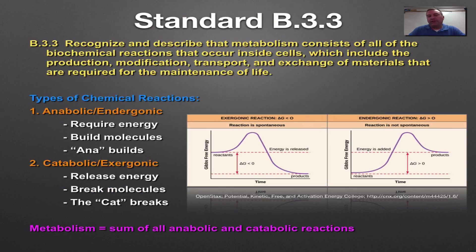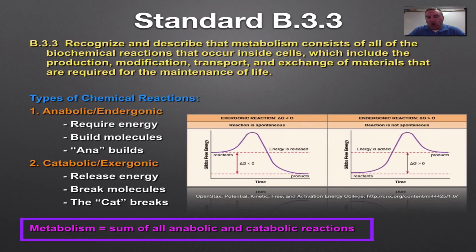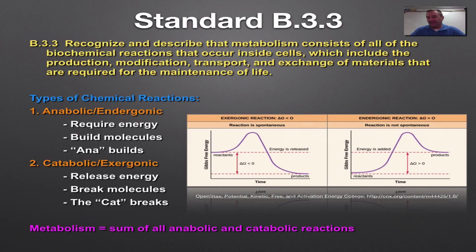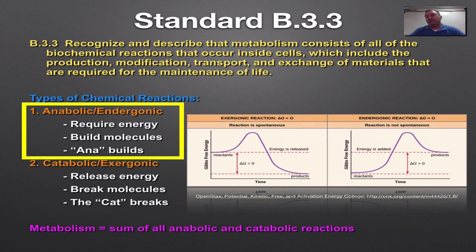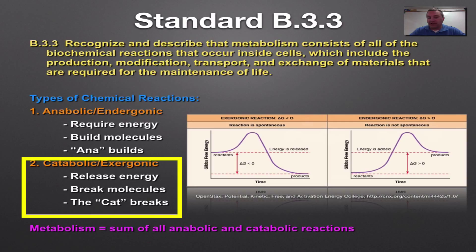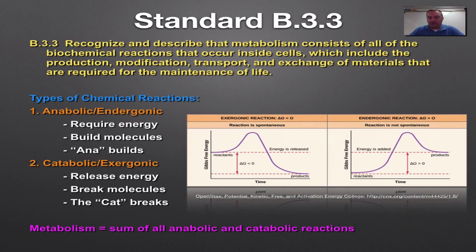Standard 3.3 is about metabolism — the sum of all chemical reactions in your body. Living things have two types of reactions: anabolic/endergonic and catabolic/exergonic. Anabolic means you require energy — you're taking in energy and building molecules, like in dehydration synthesis where monomers are linked together. A good way to remember it: 'ana builds' — anabolic reactions build molecules and that takes energy.